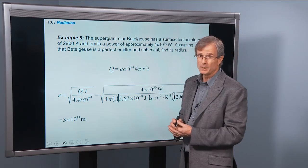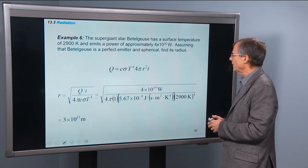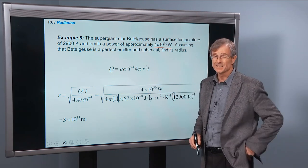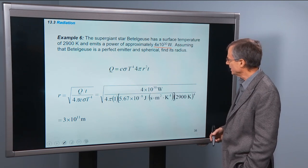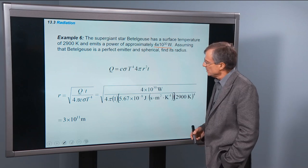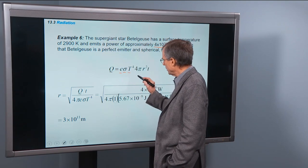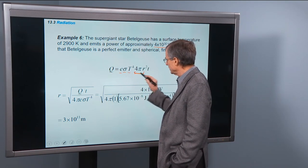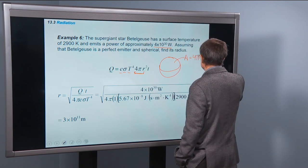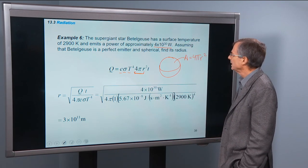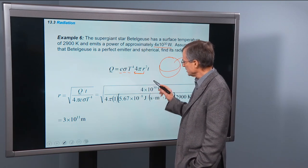Supergiant Betelgeuse has a surface temperature of 2900K, emits a power of approximately 4 times 10 to the 30 watts. I told you that the sun's power is about 10 to the 26 watts. Assuming that Betelgeuse is a perfect emitter and spherical, find its radius. Here's the Stefan-Boltzmann law. Here's e, sigma, t to the 4th. This is the area. That's going to be the surface area of that star. This is 4 pi r squared times the time. So here's another example of dividing by the time. We're going to solve for r. We're going to divide both sides by time.